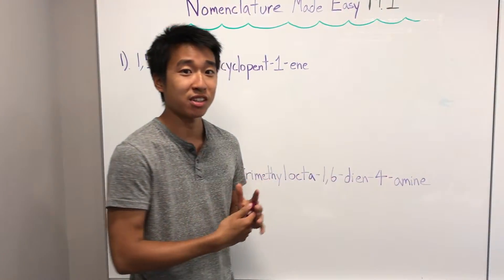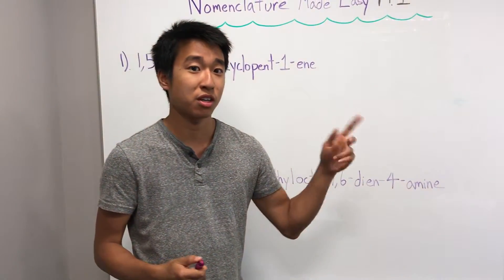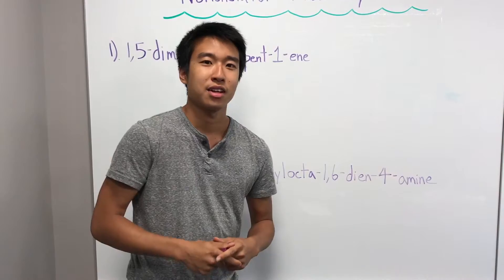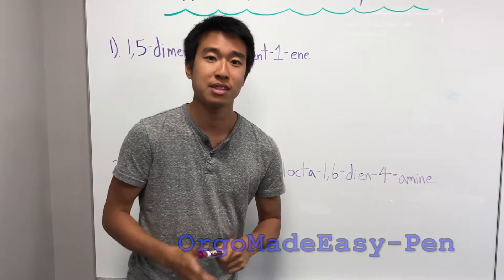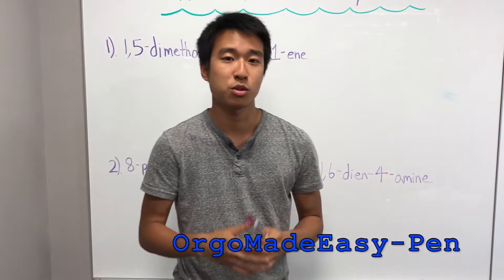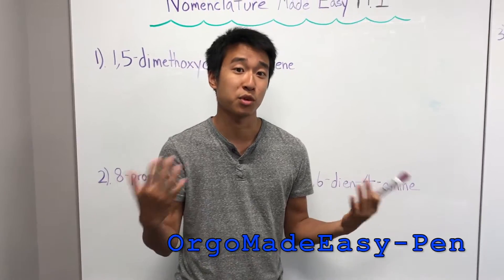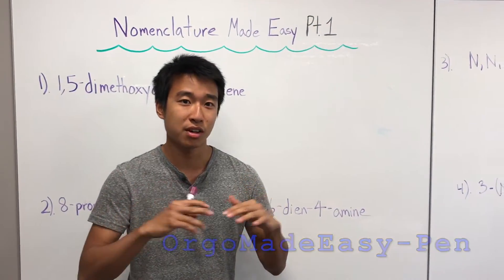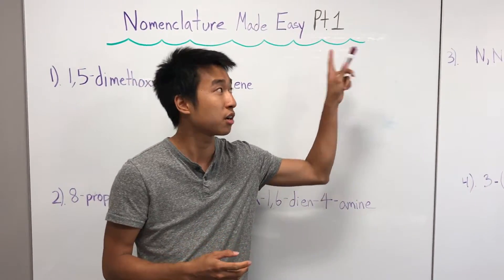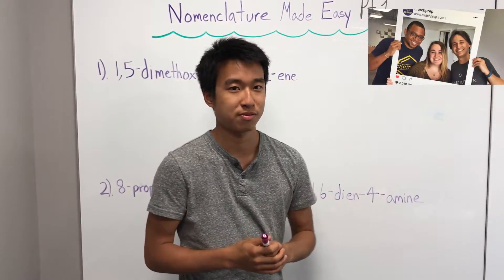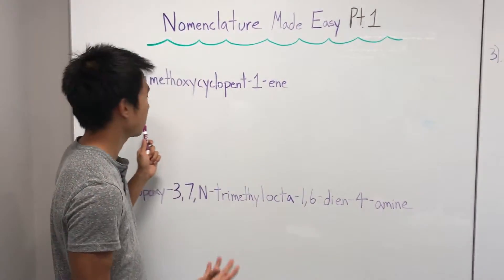Alright, welcome back. Did you guys get the four structures? Well, we're going to go through this right now, and you'll see if we got it right or not. But before that, if you're looking for the Clutch Prep coupon code, it's orgomadeeasy-pen, and with that code, you can get 20% off by being a subscriber of orgomadeeasy. And Clutch Prep is an awesome resource for orgo, MCATs, physics, you name it. And if you don't know who they are, you can check our video right here in the cards for more information.